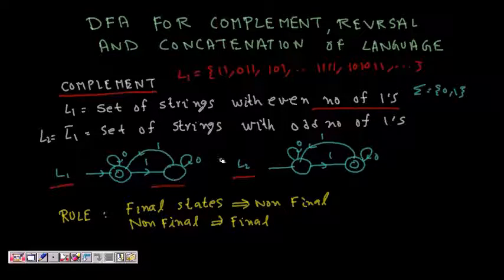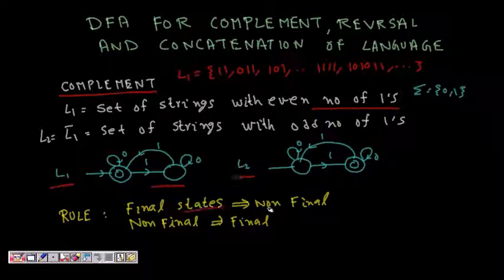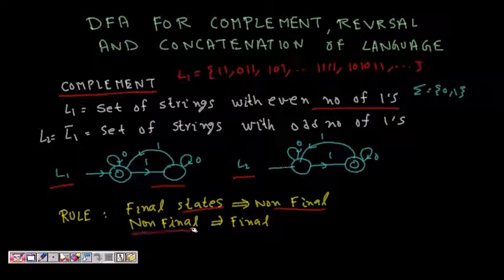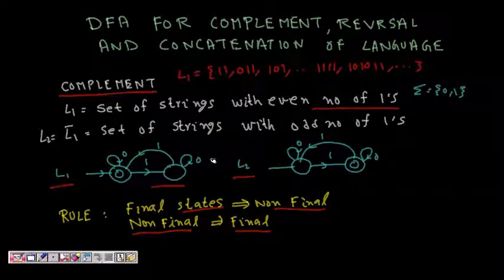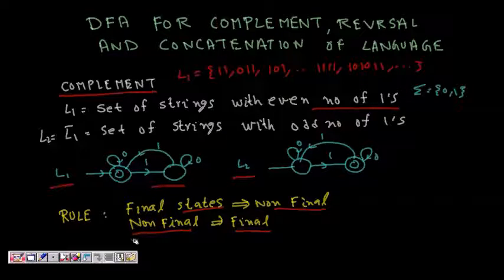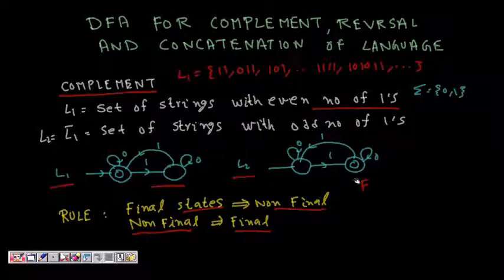In the complement DFA, the final states become non-final and the non-final states become final. This is the only change you need to make to find the complement of a language using a DFA. If the original DFA has final state set F, then Q minus F will be the final state set for the complement.